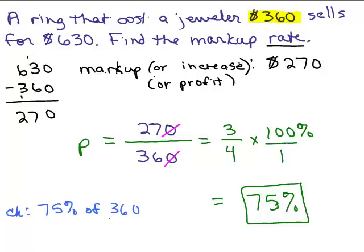And you could do that in the calculator, 0.75 times 360, or you could say 3 fourths times 360 and you're going to get $270.